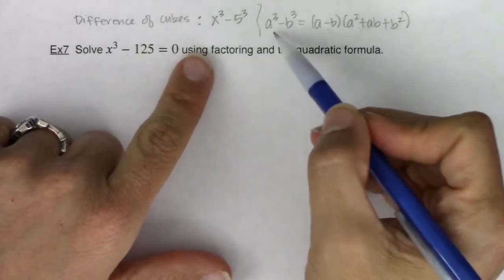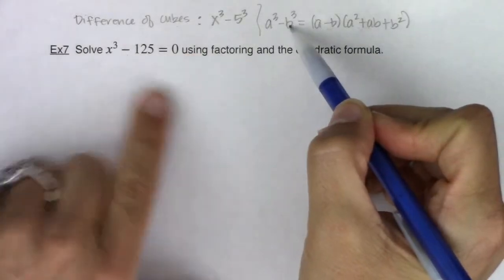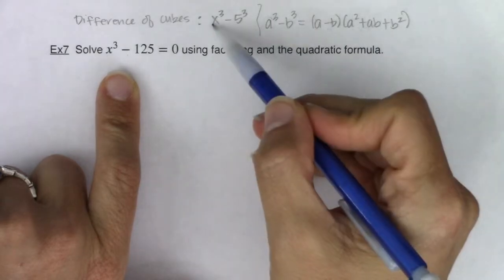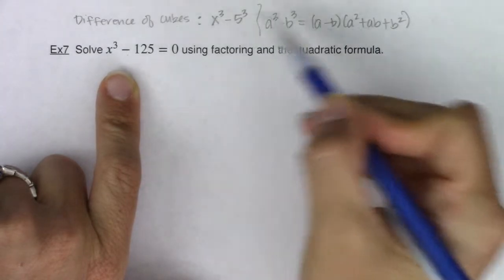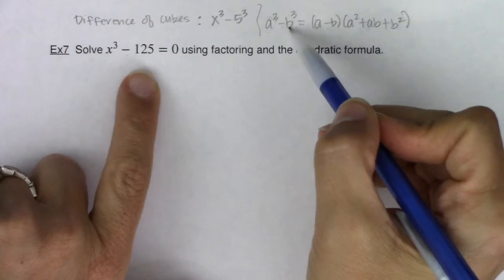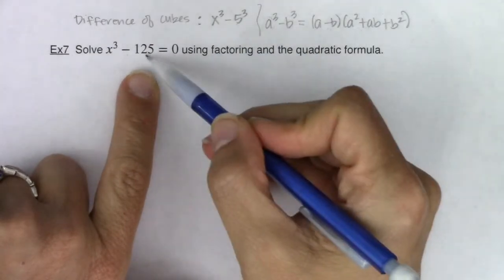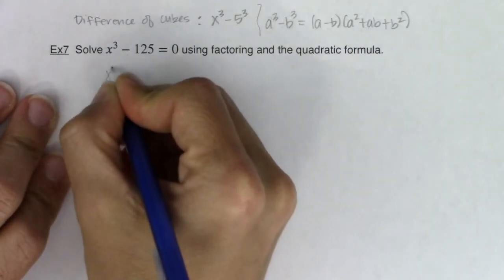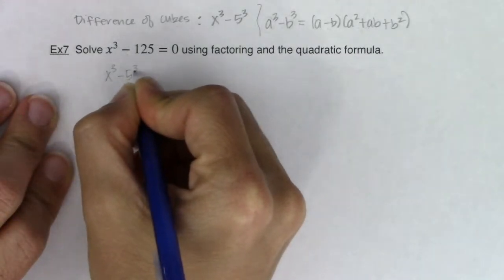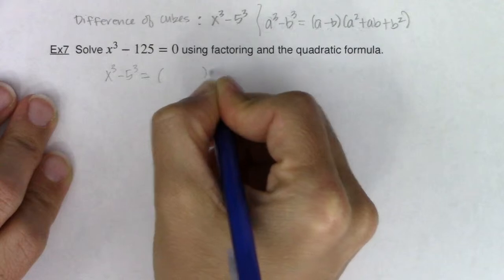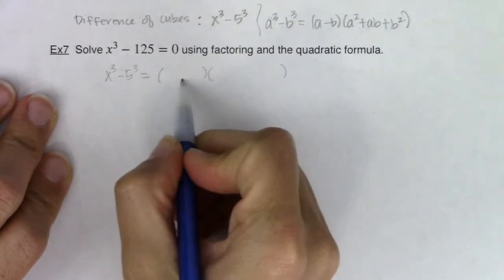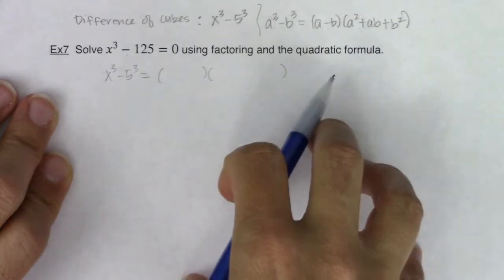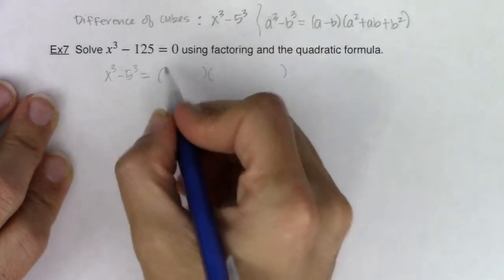So let's take a look at what's playing the role of a and b for this problem. So playing the role of a in the a position is the letter x. And in the b position, a cubed minus b cubed is 5, because this is the number 5 cubed. So I'm looking at this and I have x cubed minus 5 cubed. So I can turn that into a binomial and a trinomial. So instead of a minus b, for our particular problem, it will be x minus 5.